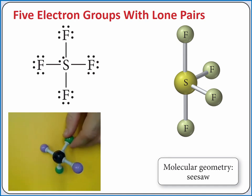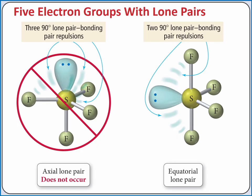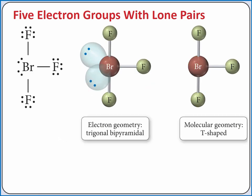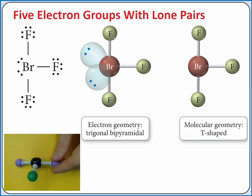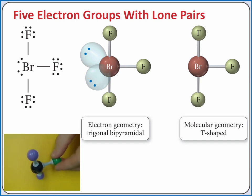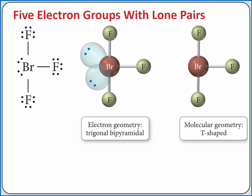This is the case for sulfur tetrafluoride. Notice that the lone pair is in the equatorial position instead of the axial position. This gives the lone pair of electrons the most room possible because its bond angles with the other equatorial groups are about 120 degrees. If we have three bonding groups and two lone pairs of electrons on the central atom, our molecular geometry is called T-shaped. This is the case for bromine trifluoride. Notice again that the two lone pairs are put in the equatorial positions to give them the most room.